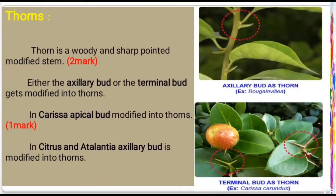Thorn is a spine — a short, pointed part. Thorn is a woody and sharp-pointed modified stem. This is one type of modified stem. There are two characters involved: axillary buds and terminal buds.